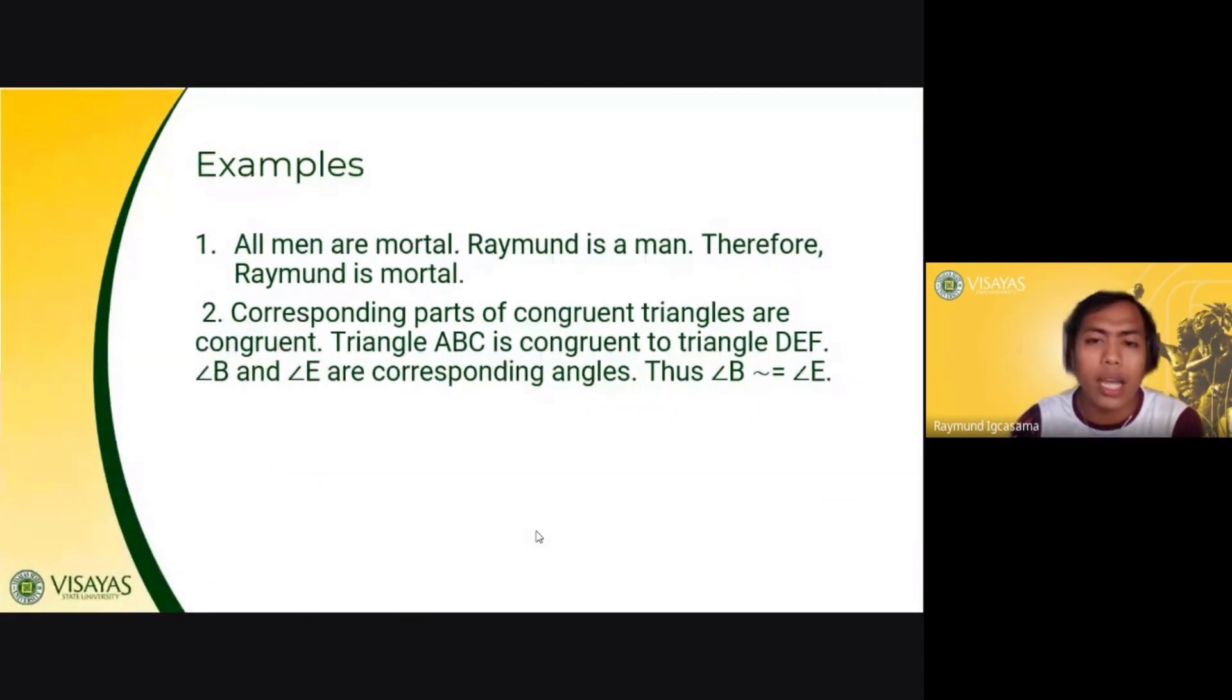Example. All men are mortal. Raymond is a man. Therefore, Raymond is mortal. So you are given with a general statement, a universal statement. Then you give a specific example, and then you give a conclusion.